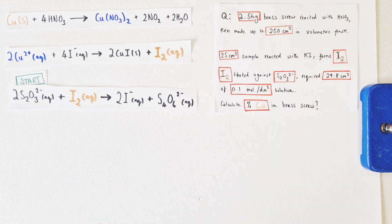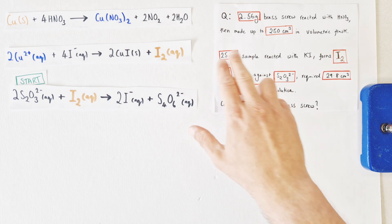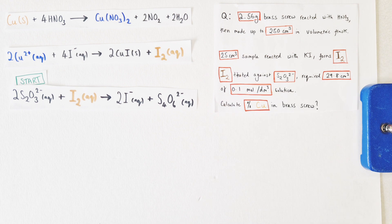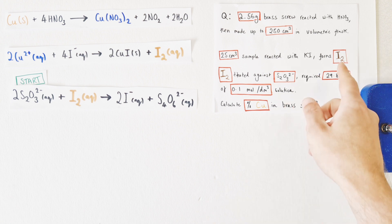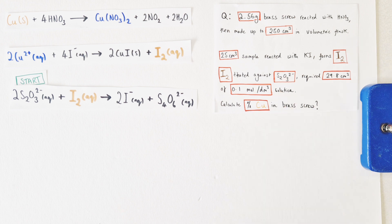Imagine we have a 2.56 gram brass screw which we have reacted with the concentrated nitric acid to release the copper 2+ ions. We've then made that solution up to 250 centimeters cubed in a volumetric flask with distilled water. We've taken a 25 centimeter cubed sample of that, reacted it with the excess potassium iodide to form iodine and it's that iodine that is reacting with our standard solution of sodium thiosulfate and it required 29.8 centimeters cubed of 0.1 mole per liter sodium thiosulfate solution to completely react with that iodine. We're being asked then to calculate the percentage of copper in the original brass screw.